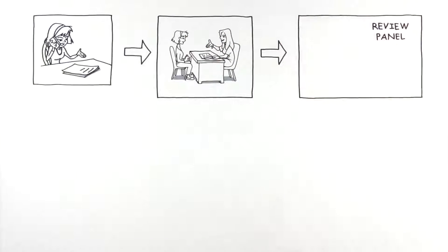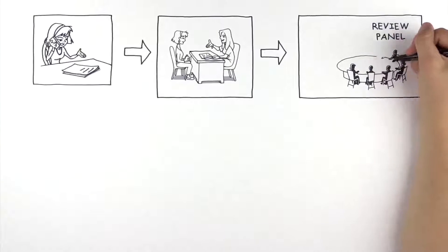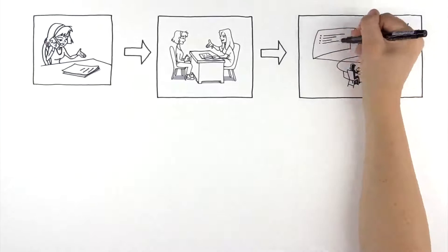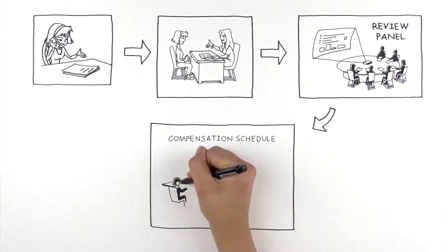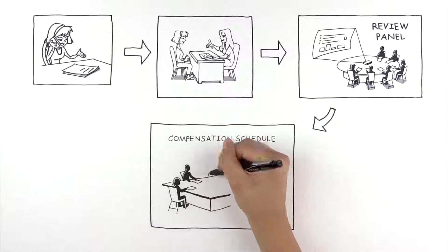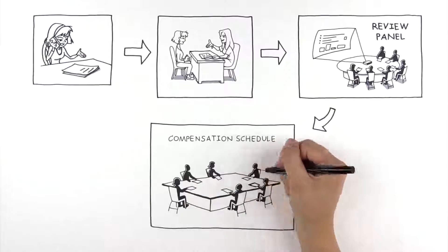The application is then sent to an independent medical review panel. Here, the claim is examined and the panel determines whether it should be recommended to receive compensation. If the claim is found eligible, a separate compensation schedule determines compensation based on what has historically been paid for similar injuries.